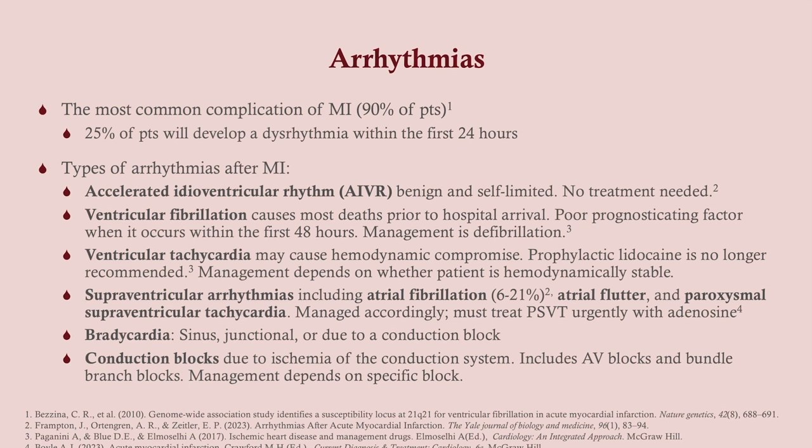Arrhythmias are the most common complication of MI. Almost all patients will have some sort of arrhythmia, which may be subclinical or actually symptomatic. Because we have patients on continuous EKG monitoring while in the hospital, it's common to pick up arrhythmias — which is probably why we see so many, even though the majority are likely asymptomatic. Pretty much any arrhythmia can be a consequence of an MI, but the big ones to remember are V-fib, because it can result in sudden death. Many patients will have V-fib before they even get to the hospital and consequently die. Another important group is the conduction blocks.